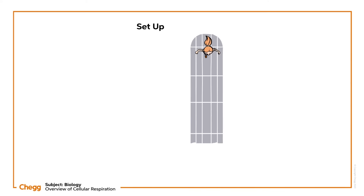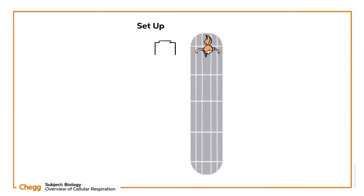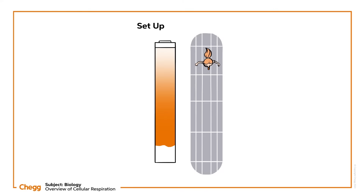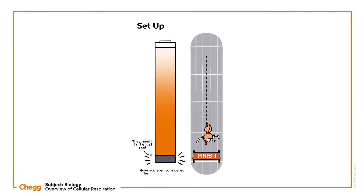If you've ever watched a sprinting race, you may have noticed that sprinters often start the race slowly and then gradually increase their speed. Why is that? Often it's to conserve energy until they need it in the last push. But have you ever considered the process involved in energy production? The source of energy use and storage at the cellular level — essentially all of the energy we use to keep our biological processes functioning — is the compound ATP, or adenosine triphosphate.